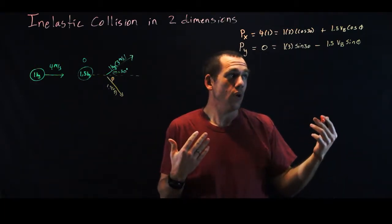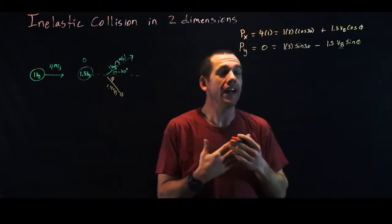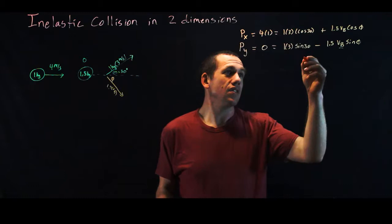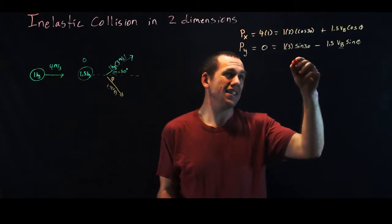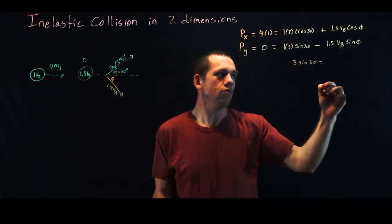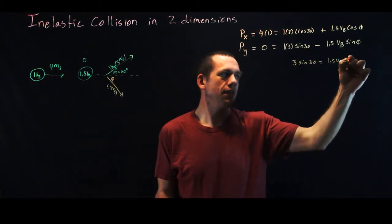And right away from this, we can actually see we only have two unknowns, vb and phi. And so we're actually going to be able to use substitution. We can get these things to eliminate. And so if I just solve this equation, I see that 3 sine 30 is equal to 1.5 vb sine phi.